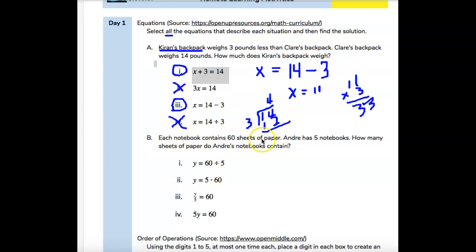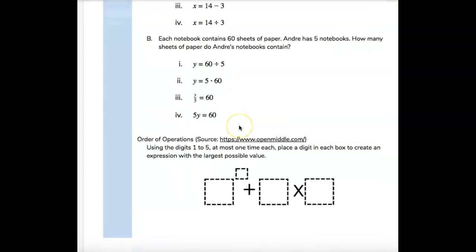So I'm going to read this one to you and then you will figure that one out. Each notebook contains 60 sheets of paper. Andre has five notebooks. How many sheets of paper do Andre's notebooks contain? There's five notebooks, 60 sheets in each one. What operation can you use to find out how many sheets of paper are there all together? I'll let you work on that one.